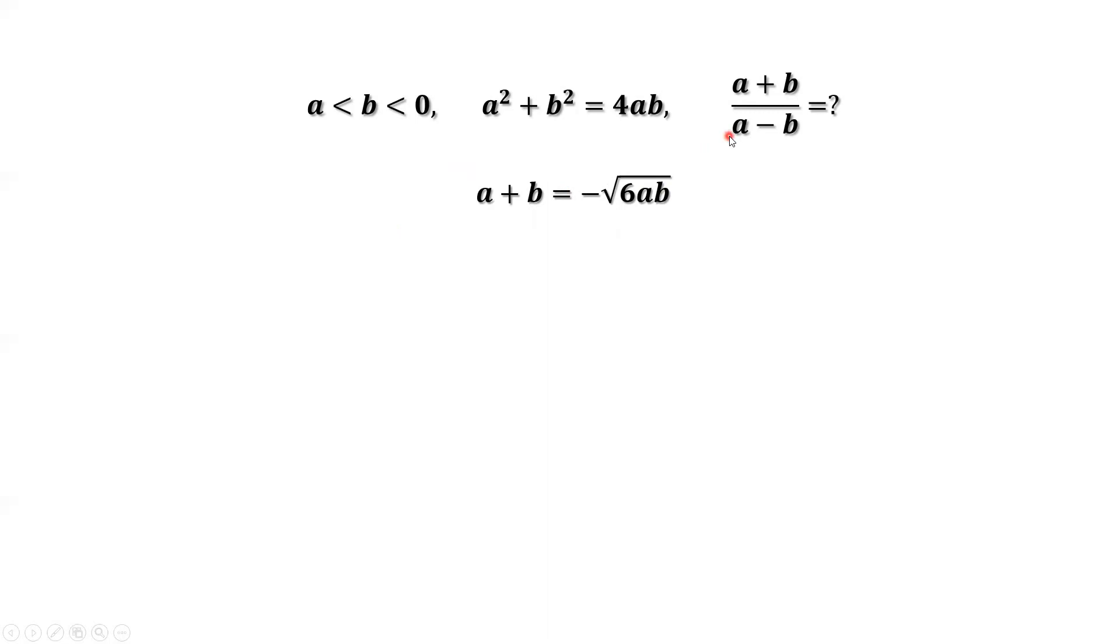We still need to find a minus b. How to find a minus b? Similarly, from this given condition, both sides minus 2ab. The left-hand side is a square, which is a minus b square. Simplify the right-hand side. We have 2ab.